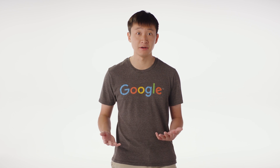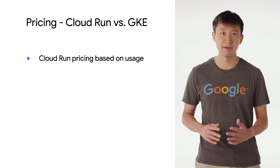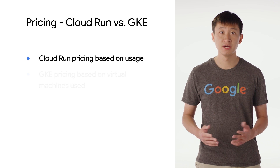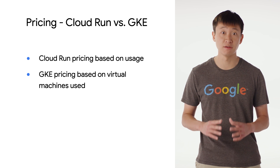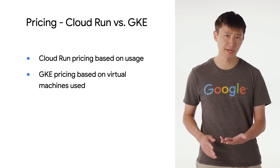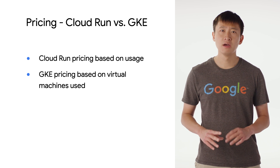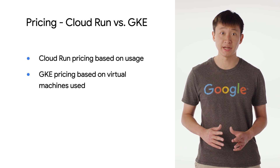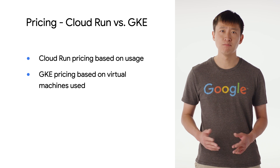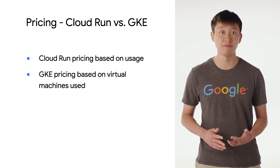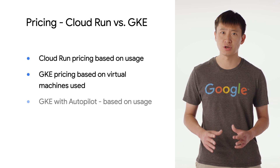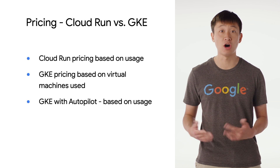One key difference between Cloud Run and Kubernetes Engine is the pricing model. While Cloud Run pricing is based on usage, the standard mode for Kubernetes Engine pricing is based on the virtual machines that are used, with one exception. For those who are already familiar with the Kubernetes API, but want usage-based pricing and a more fully managed mode of a GKE cluster, they can turn to GKE's Autopilot mode.